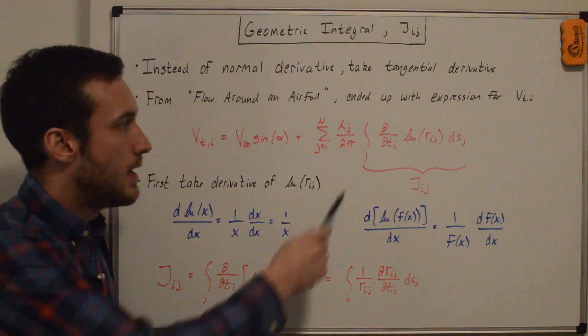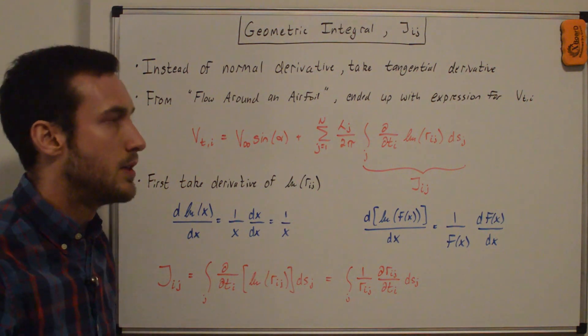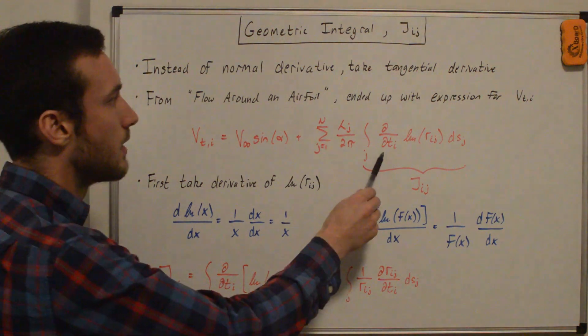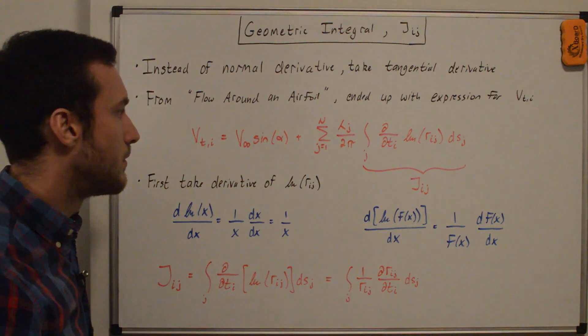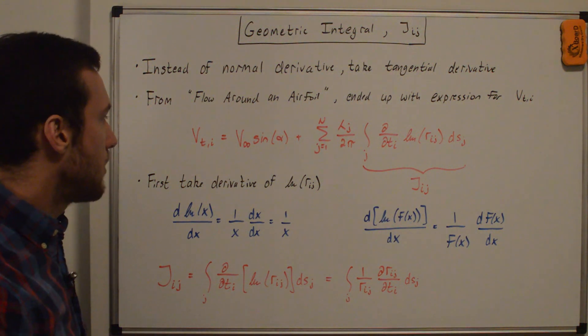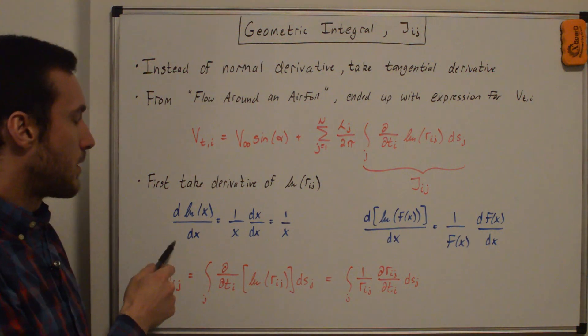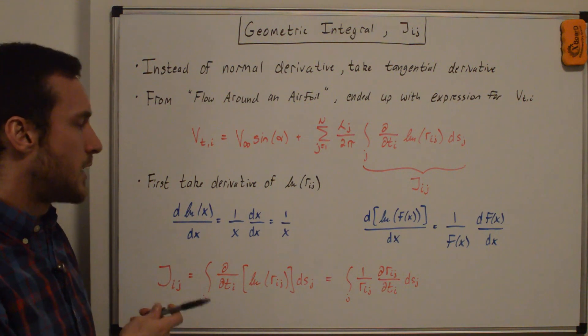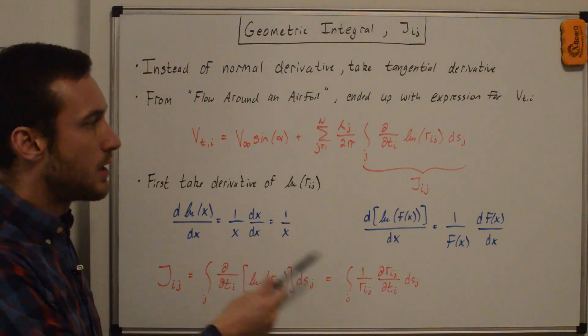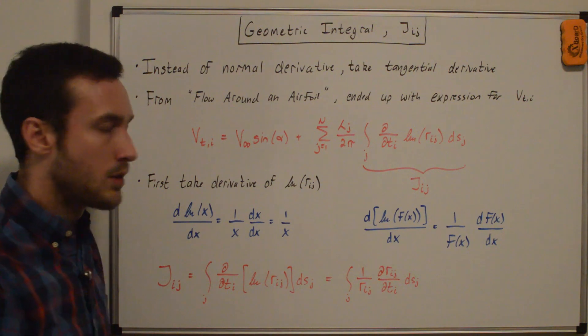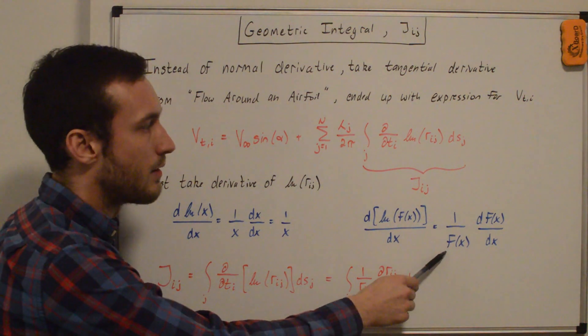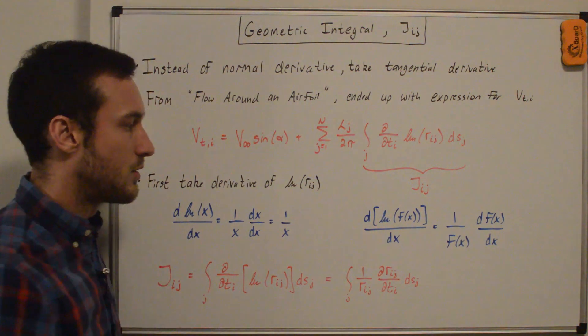So before we look at the integral portion of this, we're going to do the same thing that we did in the iij video, which is evaluate this partial derivative that's inside of the integral. And so the normal form that you are used to of the derivative of a natural log is just 1 over x. But if the argument of a natural log is also a function of x, then we have 1 over f(x), df(x)/dx. That's just the chain rule.